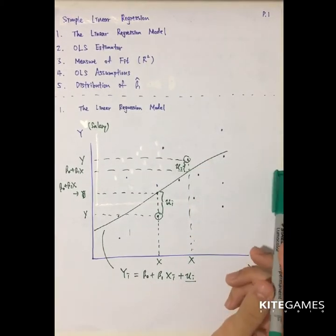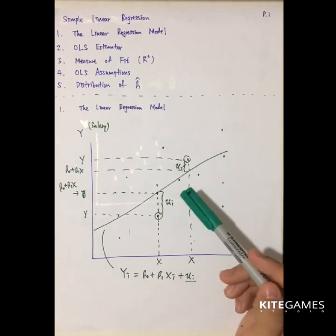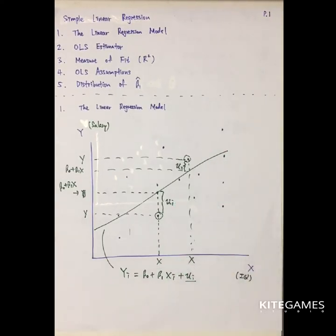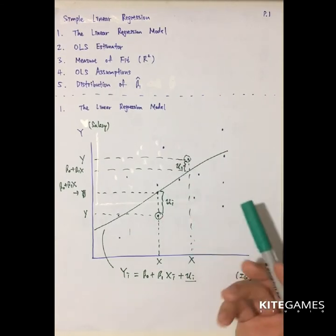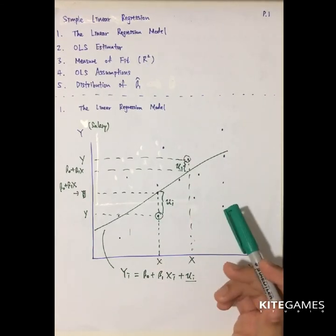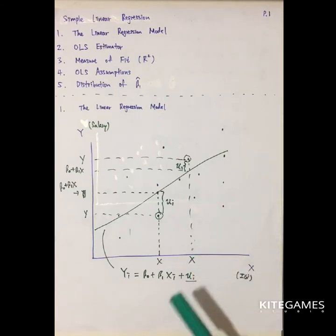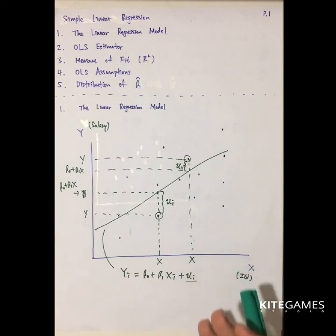In reality, you seldom know this population regression model, because as mentioned in previous videos, the population has millions and millions of people. It requires lots of resources to capture all the information of the whole population. So what econometricians do is randomly draw out some sample, and we hope that this sample can represent the whole population.